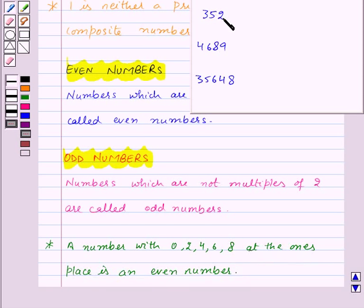So here in this we have 2 at ones place so this is an even number. In this we have 9 at ones place so this is an odd number. And in this we have 8 at ones place so this is also an even number.